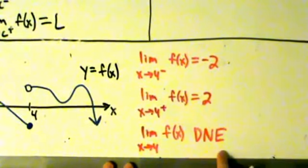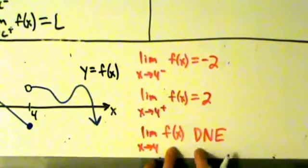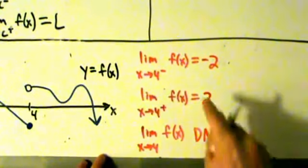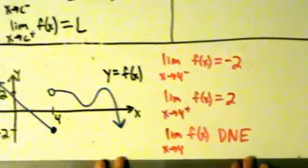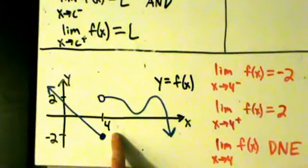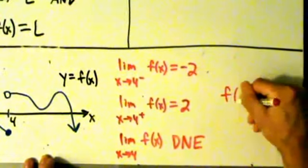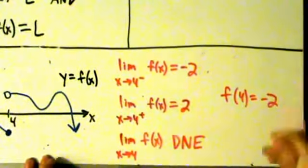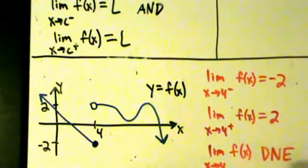DNE is short for does not exist. You don't want to say equals DNE — that's not really correct. The limit as x approaches 4 of f of x does not exist because the left-hand limit and the right-hand limit don't equal the same thing. And just for fun, it's worth pointing out: when x equals 4, what is the actual value of y? It's negative 2, so f of 4 equals negative 2. But remember, that kind of stuff is irrelevant for limits. Limits just tell you how a function behaves near a certain value of x.